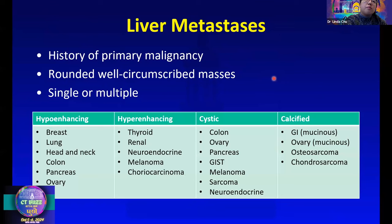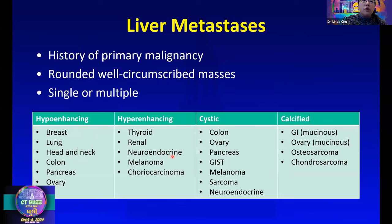Finally, we'll discuss liver metastases. Having a history of primary malignancy is obviously helpful. We may see rounded, well-circumscribed masses that can be single or multiple. The enhancement pattern depends on the underlying malignancy. Breast, lung, head and neck, and colon tend to be hypoenhancing. Primary tumors from thyroid, renal, neuroendocrine, melanoma, and choriocarcinoma tend to be hyperenhancing. Cystic metastases come from colon, ovary, and GIST among others.